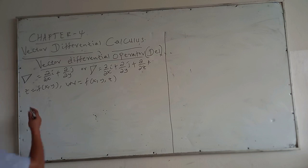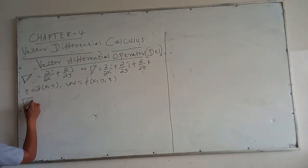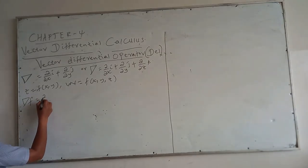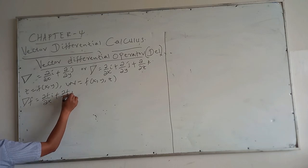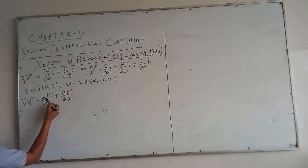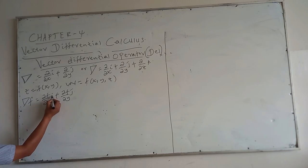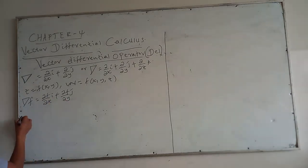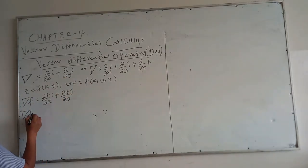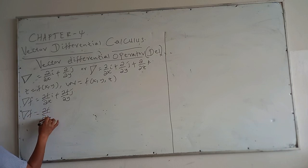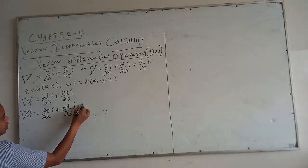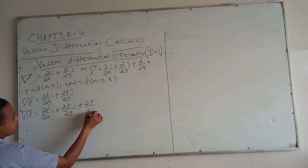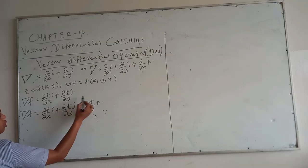The gradient of f is defined as: partial of f with respect to x in i, plus partial of f with respect to y in j. In the second case, the gradient of f equals partial of f with x in i, plus partial of f with y in j, plus partial of f with z in k.